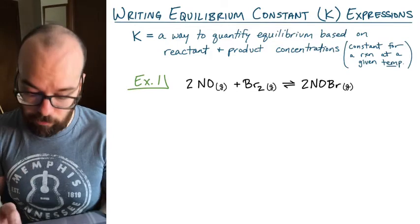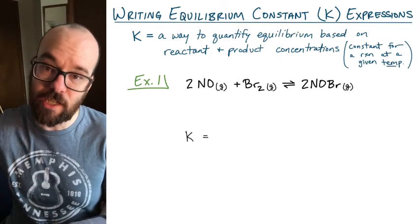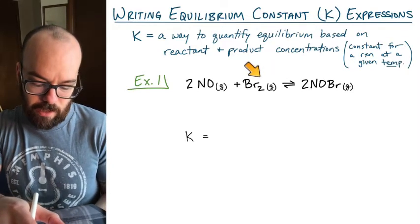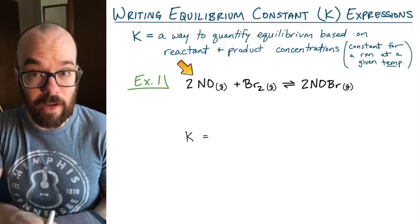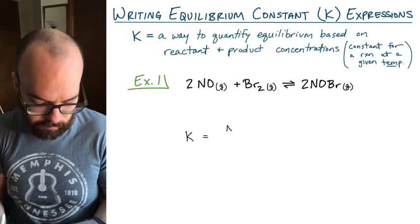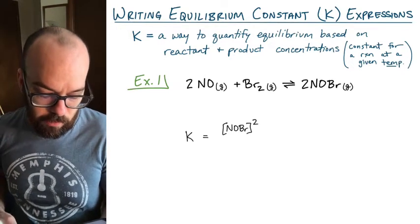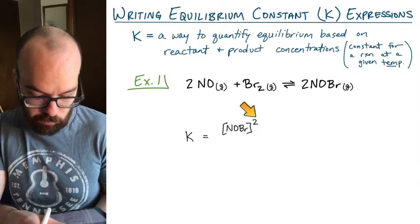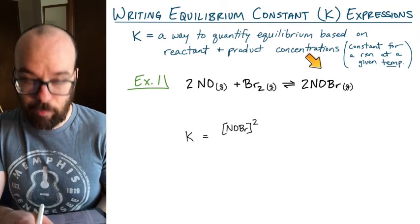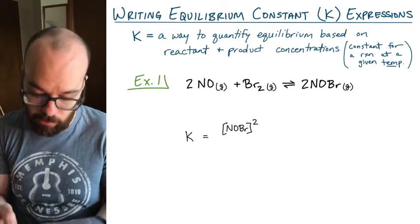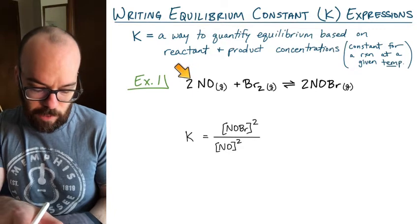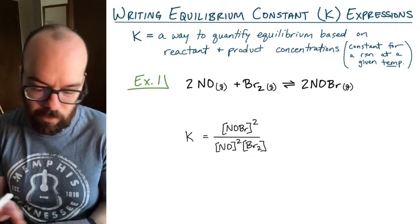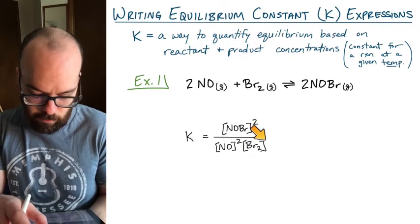Let's write our equilibrium constant — it's really simple. All you do is take the products raised to the power of their coefficients, divided by the reactants raised to the power of their coefficients. We start with NOBr squared, because we have a coefficient of two, which is where that squared comes from. That's the only product, so that's the only thing in our numerator. Then we take the concentration of NO to the power of two, times the concentration of Br₂ to the power of one.